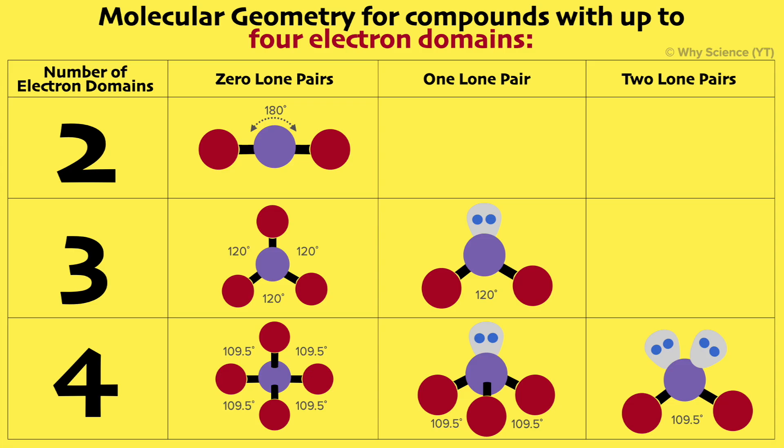To make things clear and organized, I have a chart that summarizes all the possible molecular geometries for compounds that have up to four electron domains. We will tackle each of those later in this video.